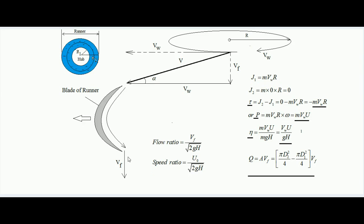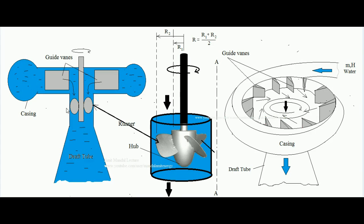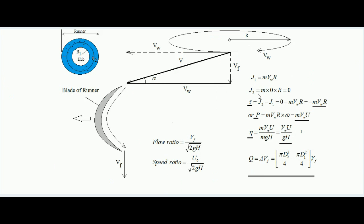Since water leaves the blade without any rotational motion, the final angular momentum J2 equals m·0·r = 0, where m is the mass flow rate of water through the system. In translational motion the rate of change of momentum equals the developed force; similarly in rotational motion the rate of change of angular momentum equals the developed torque. Therefore the change in angular momentum is final minus initial: 0 − m·Vw·r. The total torque developed over the rotor equals m·Vw·r (taking magnitude), since m is already in kg/s.